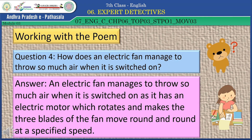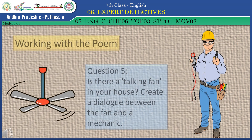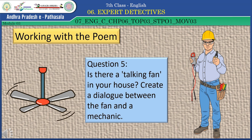Question 4: How does an electric fan manage to throw so much air when it is switched on? The correct answer is: an electric fan manages to throw so much air because it has an electric motor which rotates and makes the three blades of the fan move round and round at a specified speed. Children, let's move on to working with the poem.